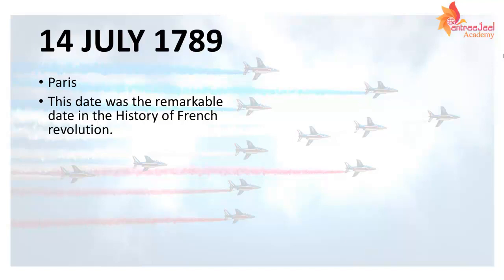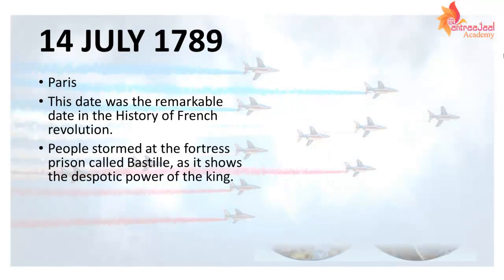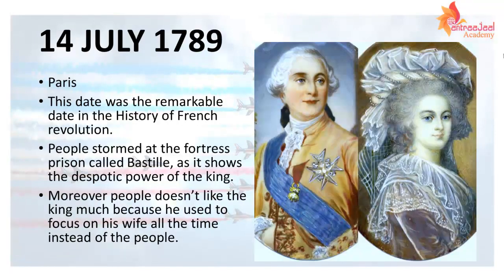We are going to talk about the political system and Paris. On 14th July 1789, the people went to attack the Bastille. The Bastille was a prison fort, and the attack on it represented a challenge to the king's despotic power.